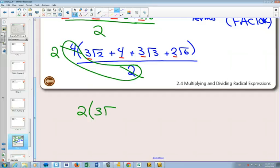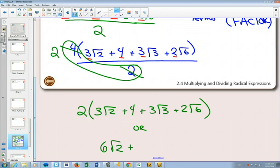2 in front, and you'd still have the 3 root 2, the 4, plus the 3 root 3, plus the 2 root 6. This would be in factored form, and that would be full simplified marks. Or if you wanted to redistribute that 2 throughout everything and say 2 times 3 is 6 root 2, 2 times 4 is 8, 2 times 3 root 3 would be 6 root 3, and 2 times 2 root 6 would be 4 root 6. Either one of those would be fine as our final answer.